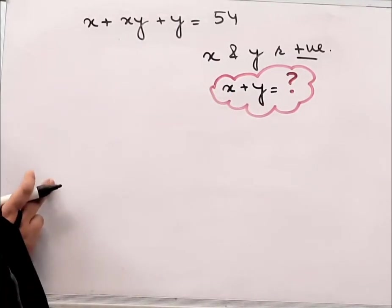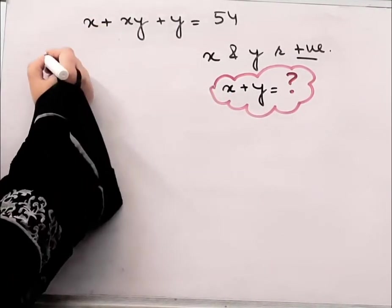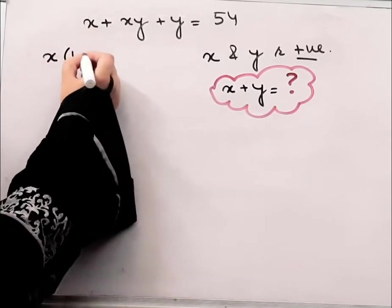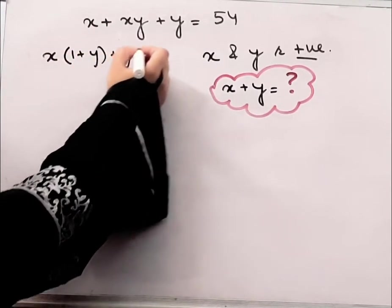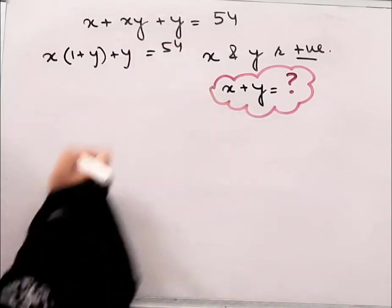Okay, what we will do here is, I will take x as common, so it will be x times (1 plus y) plus y, this is equal to 54.